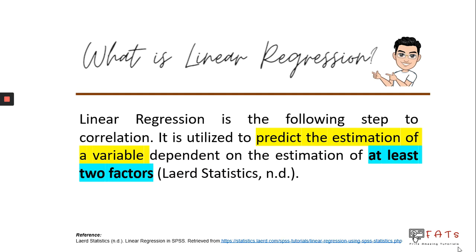So what is linear regression? Linear regression is the following step of correlation. It is utilized to predict the estimation of a variable dependent on the estimation of at least two factors. The variable in this definition refers to the dependent variable, and the two factors refer to the independent variables. Thus, we use linear regression when there are two or more independent variables.